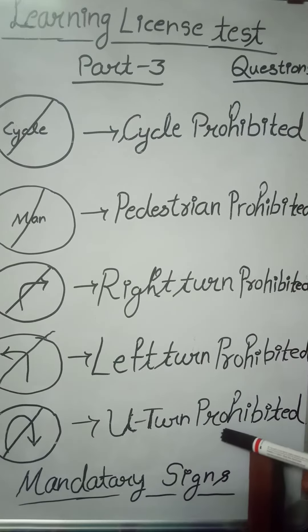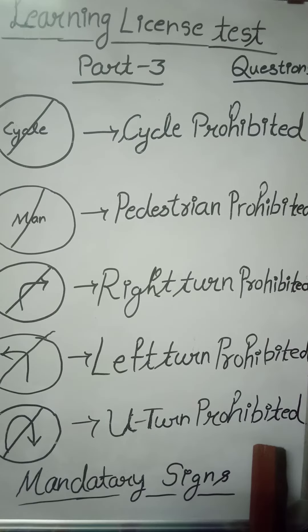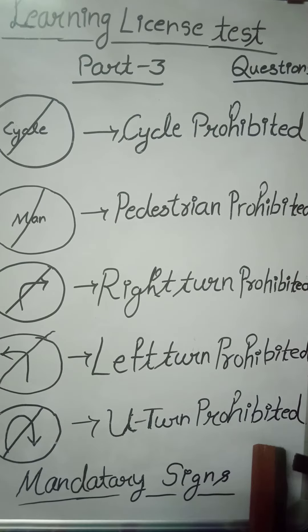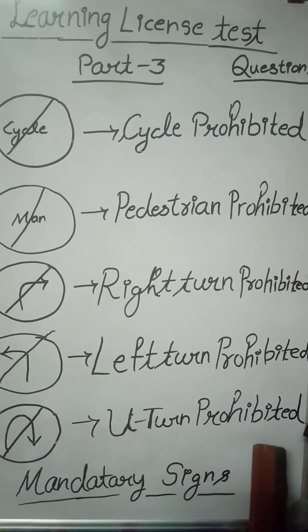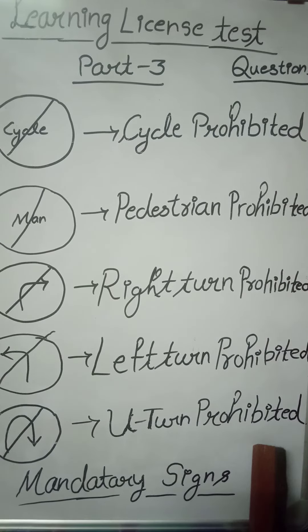The last symbol is U-turn prohibited. Whenever you are driving and you see these symbols, you have to take care and always give emphasis to these symbols during any traveling.